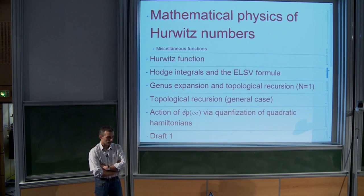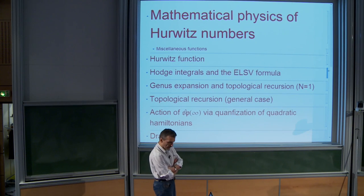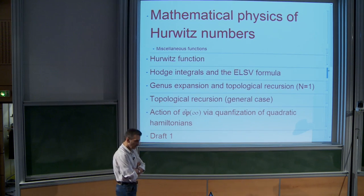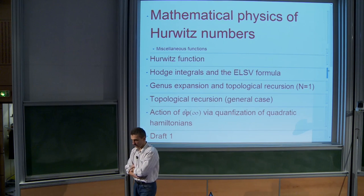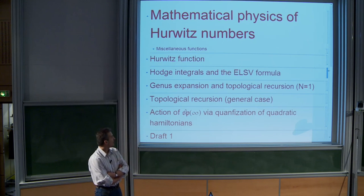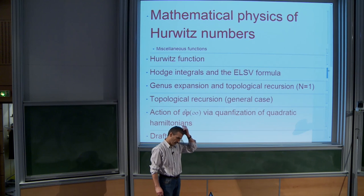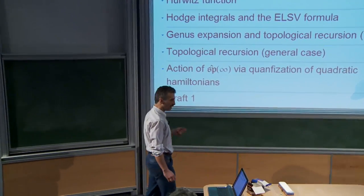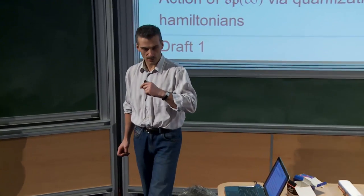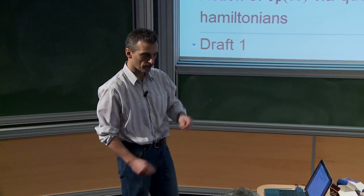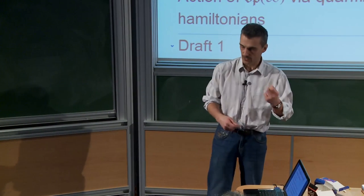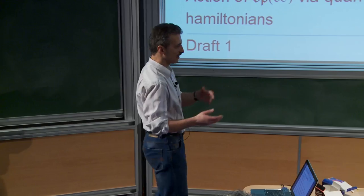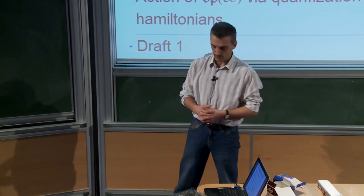So I will show you how it works. I'll speak on Hurwitz numbers and related things, and I will try to avoid considering the geometry of configuration objects — the Riemann surfaces, moduli spaces, and so on. Instead, I will concentrate on the corresponding numbers, on the generating functions, on manipulations with functions like topological recursion and the KP hierarchy, and I will show what geometry lies behind this.